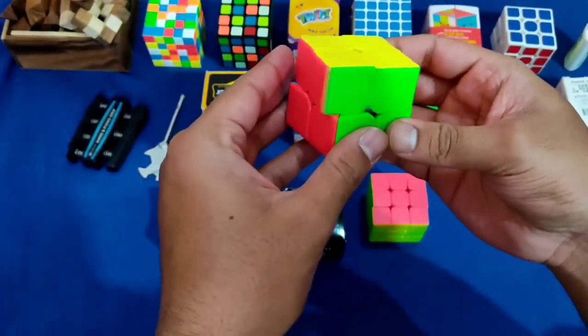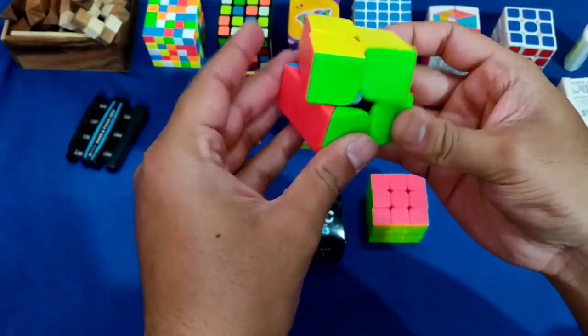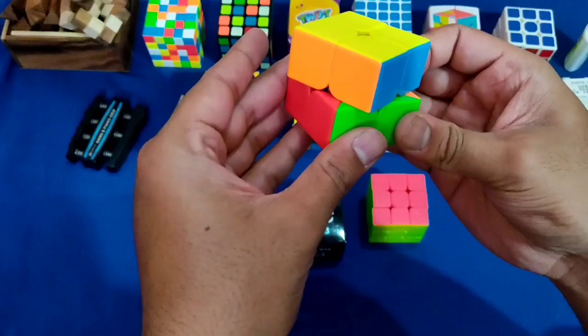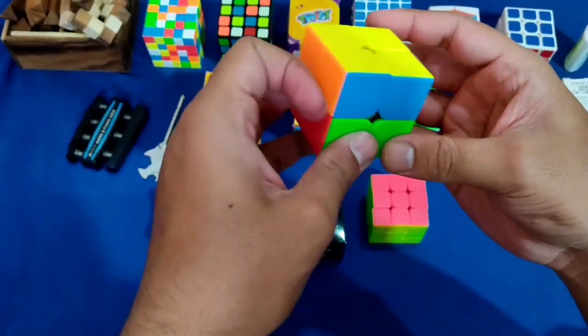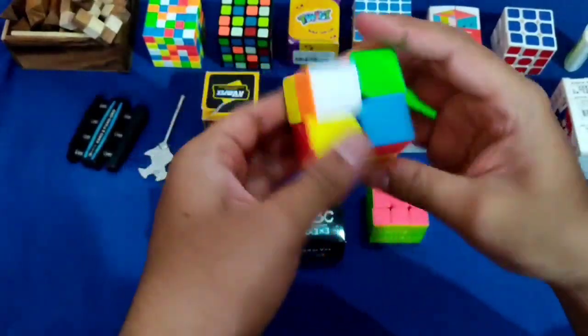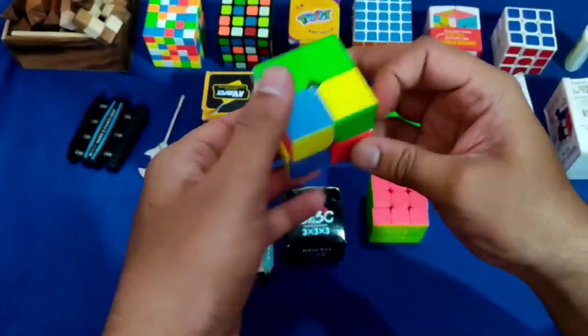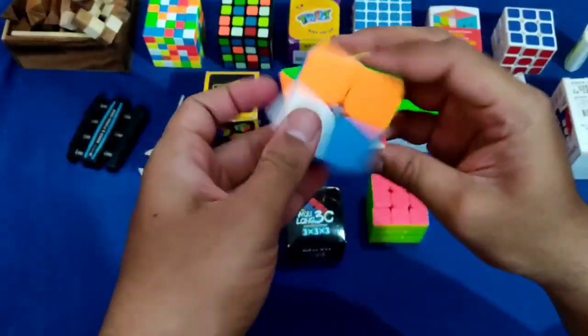Now if you talk about corner cutting, corner cutting doesn't matter much in 2x2, but the corner cutting is decent. It's very good corner cutting. And if we talk about smoothness, the cube is very smooth. And with the smoothness, it's stable. It's not that the smoothness causes unwanted moves. The stability is good for the cube.